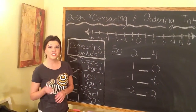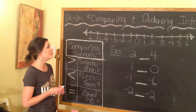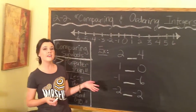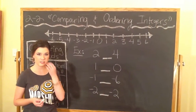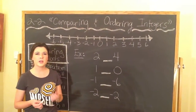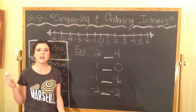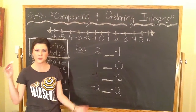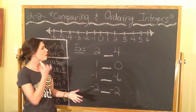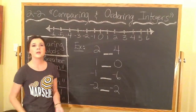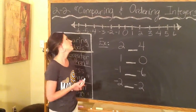Welcome to lesson 2-2. Today we're going to be talking about comparing and ordering integers — basically looking at positive and negative numbers, telling which one's bigger, which one's smaller, and putting them in order from least to greatest or greatest to least.